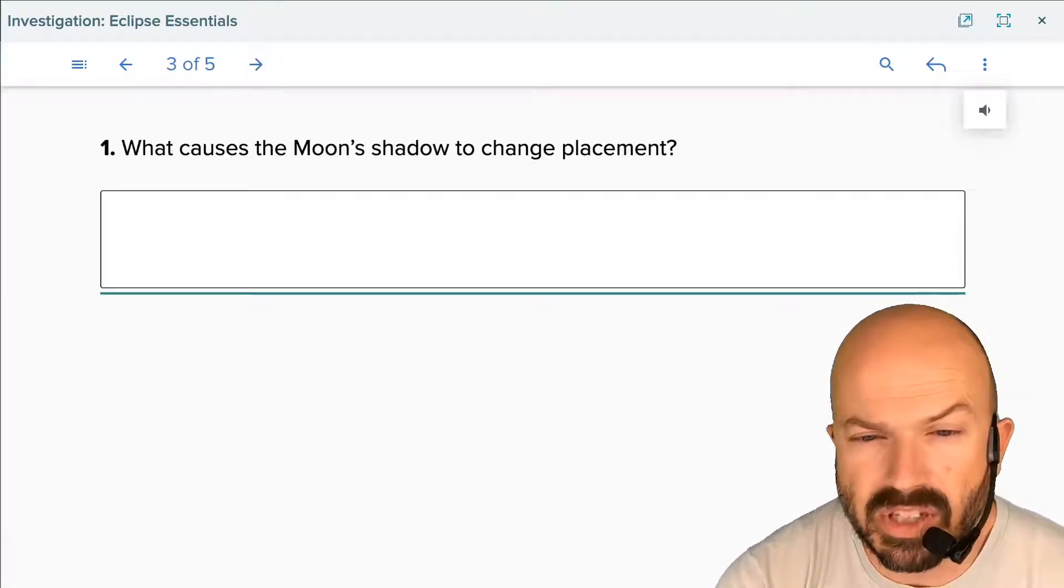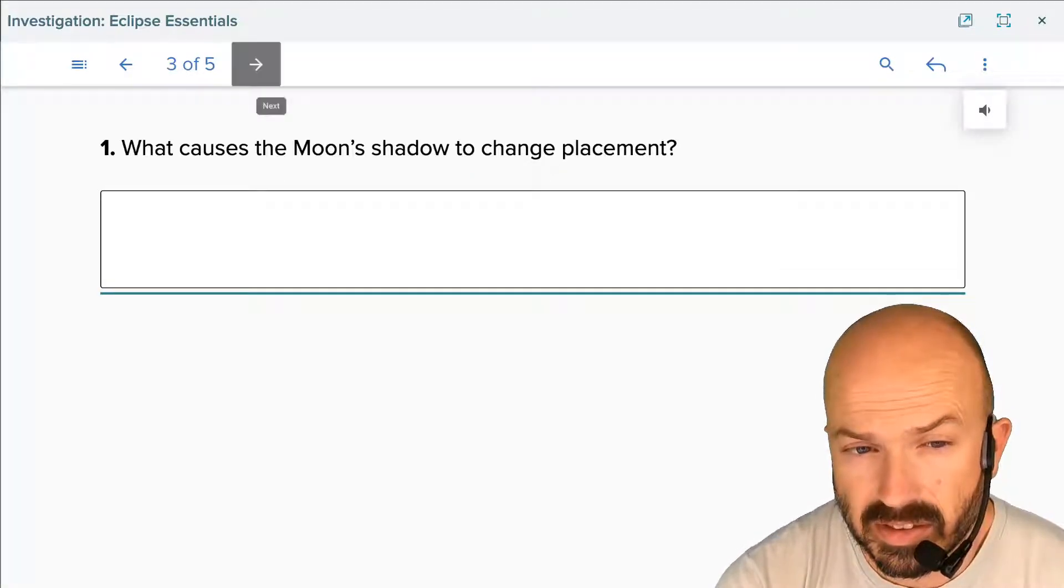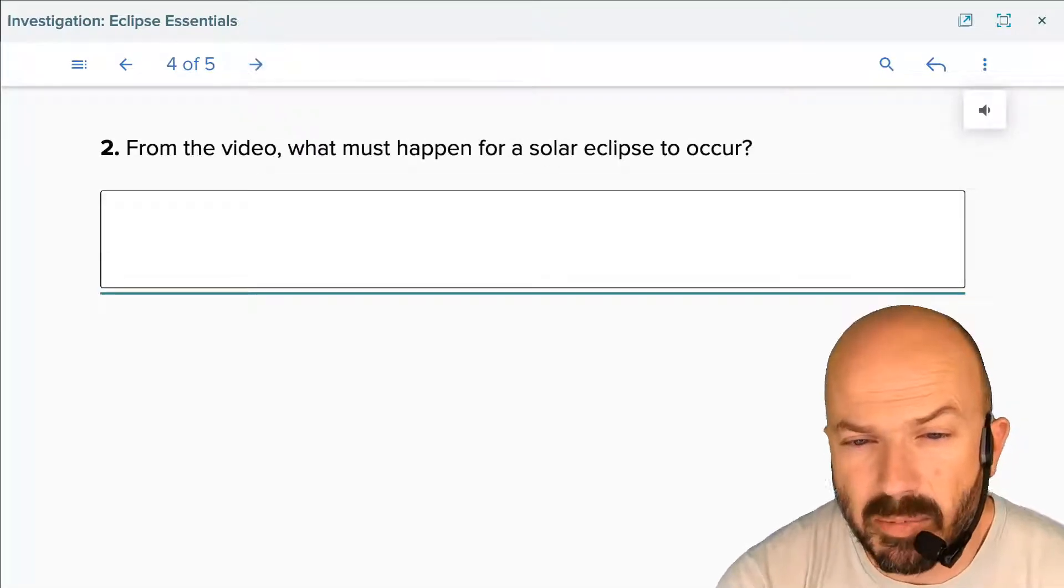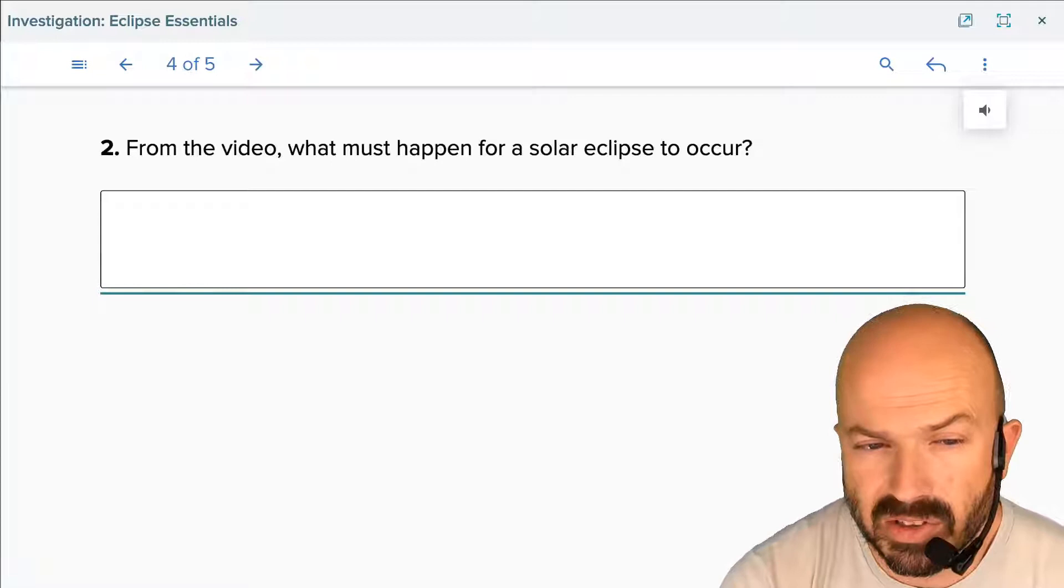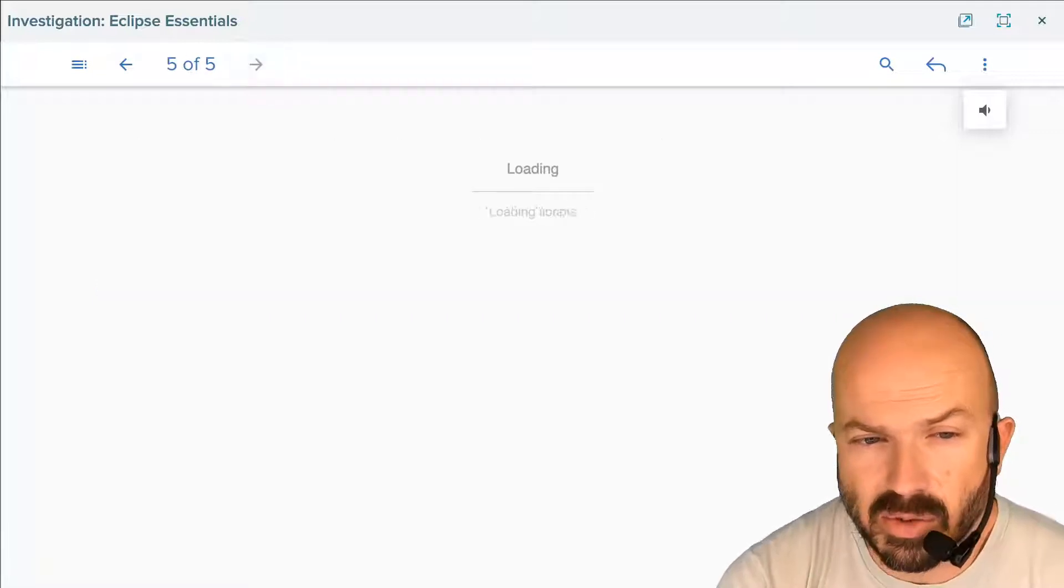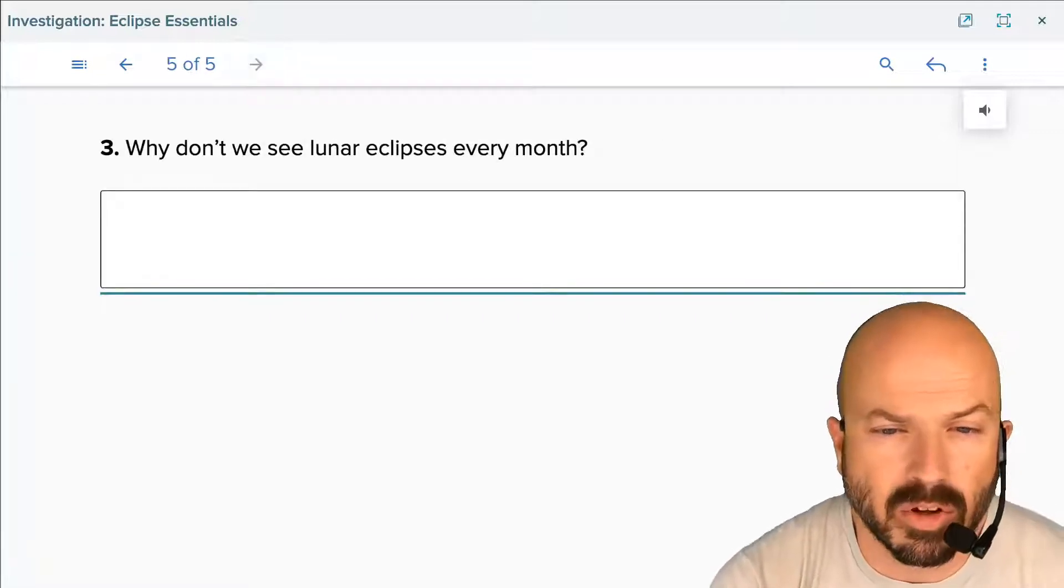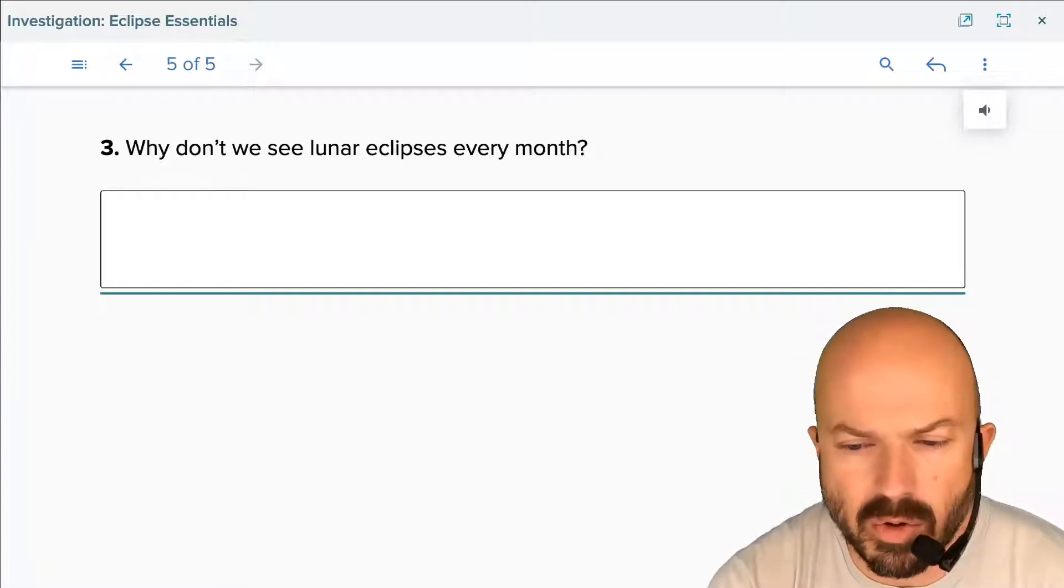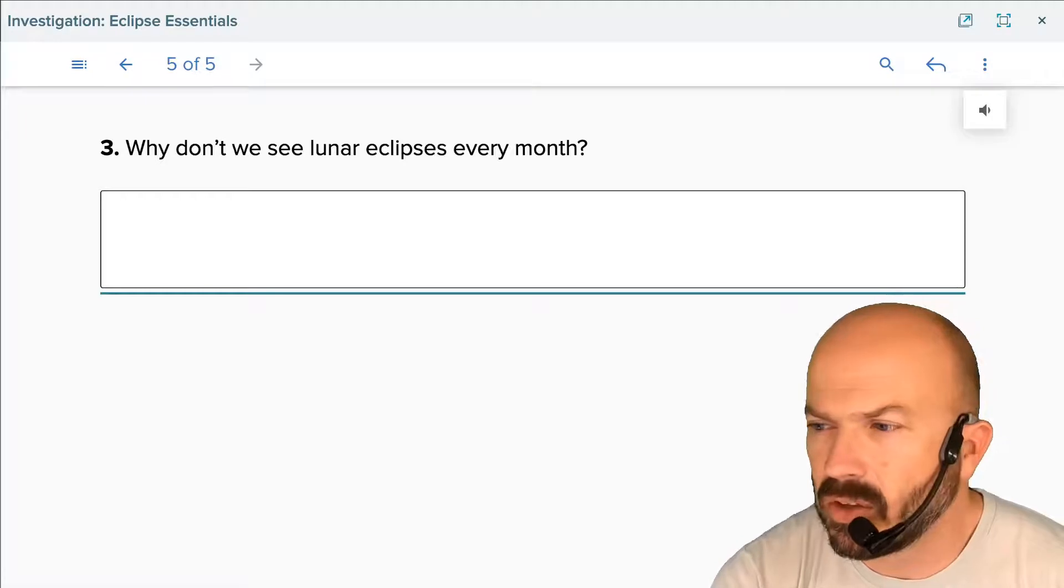So what causes the moon's shadow to change placement? From the video, what must happen for a solar eclipse to occur? And our last question is, why don't we see lunar eclipses every month? Answer those questions, pause the video, come back, and we will go on to the next. We've got a little reading.